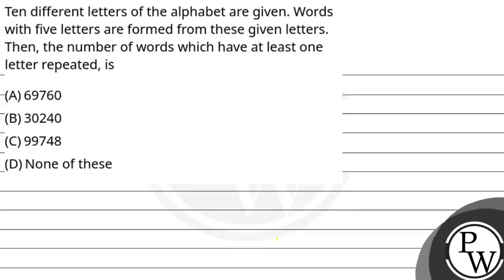Let's read this question. 10 different letters of the alphabet are given. Words with 5 letters are formed from these given letters. The number of words which have at least 1 letter repeated. The given options are: option A 69760, option B 30240, option C 99748, and option D is none of these.